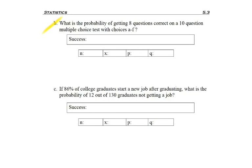Next example, 5B. What is the probability of getting 8 questions correct on a 10-question multiple choice test with choices A through F? So, to be clear, I want to know what success is, and because I want the probability of getting 8 questions correct, then I'm going to define success that way. A correct answer. Remember, N is the number of things we're looking at. So, in this case, we're looking at 10 questions on the test. X is the number that we want, in this case, to be correct. And so, there would be 8 correct we're looking for.